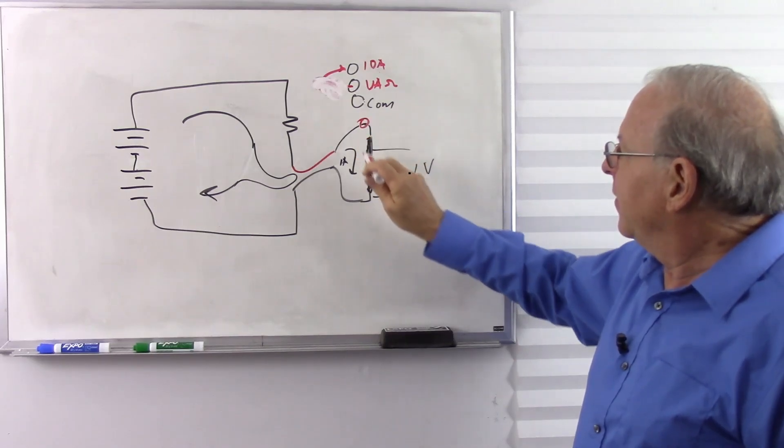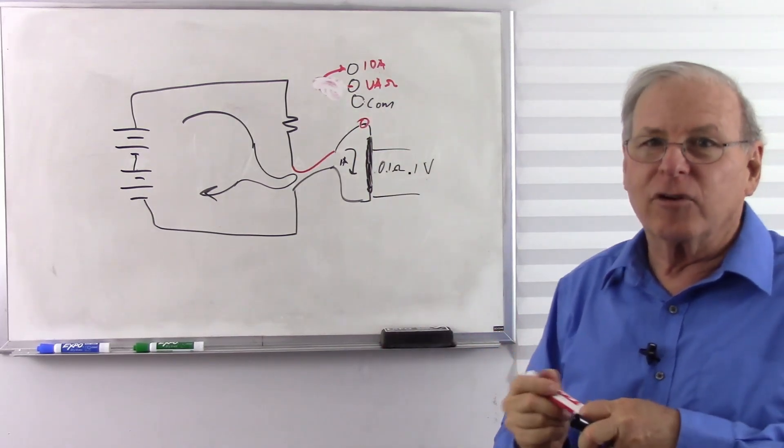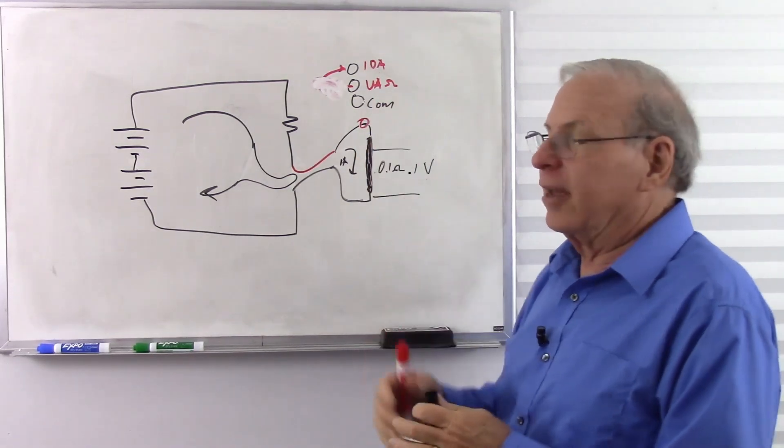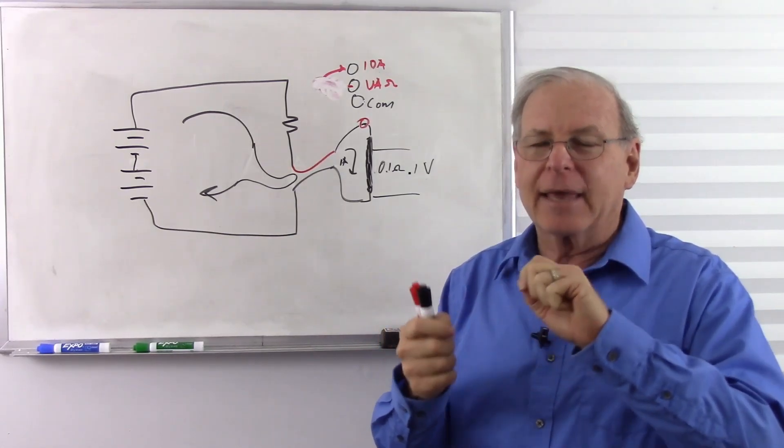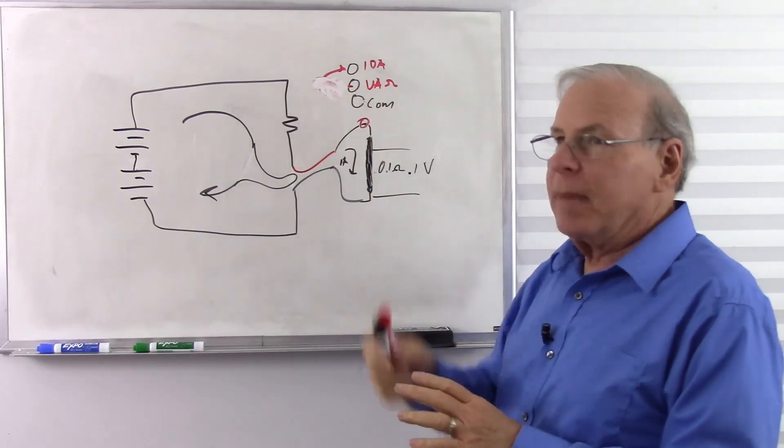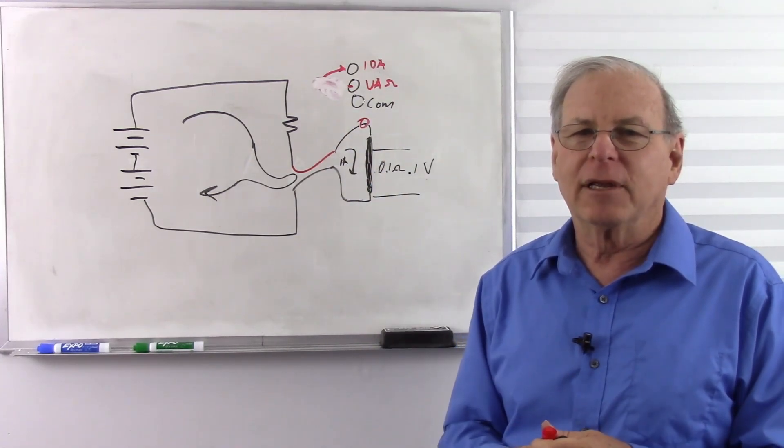So remember, that is going to cross a direct piece of metal. So you've got a direct short when you have that in the high current mode. So after doing that, always remember to take that out and put it back into the VA omega so that you don't accidentally short something out completely.